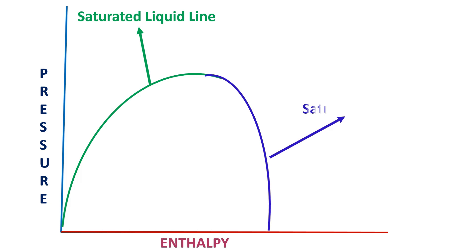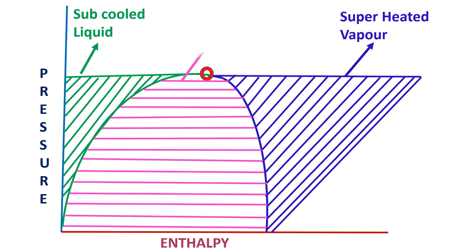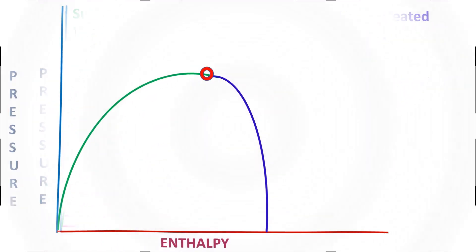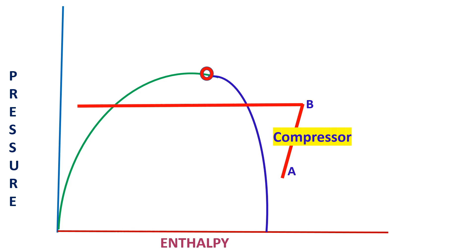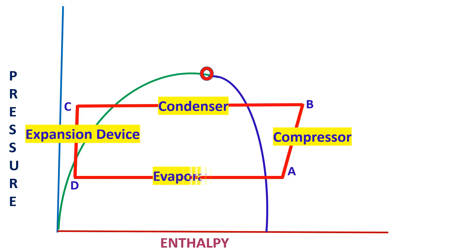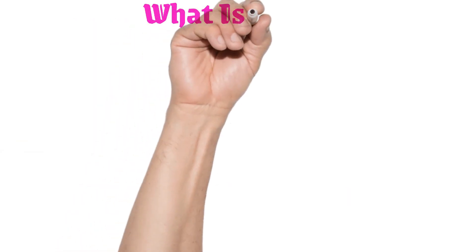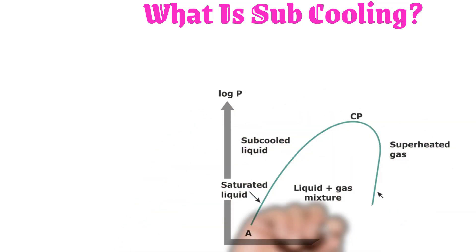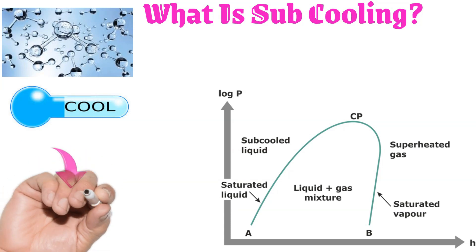On the pH chart, you can easily understand that the process extended after the condenser saturated liquid line into the sub-cooled liquid region is called sub-cooling. The vapor at the condenser is completely changed to liquid before entering the expansion device — that added cooling is called sub-cooling. Simply said, sub-cooling is the liquid cooled below its saturation temperature.